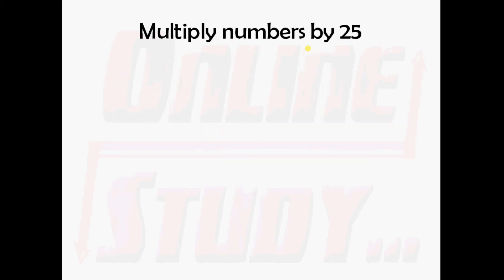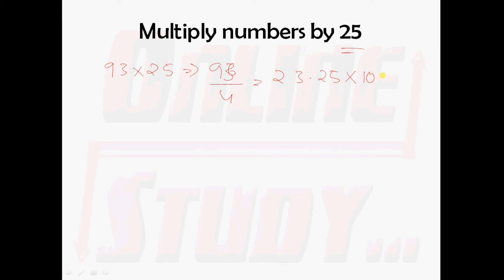Now we shall multiply numbers with 25. We shall take an example of 93 into 25. Divide 93 by 4: you will get 23.25. And this 23.25 should be multiplied with 100. So finally you will get 2325. That is, 93 into 25 is 2325.